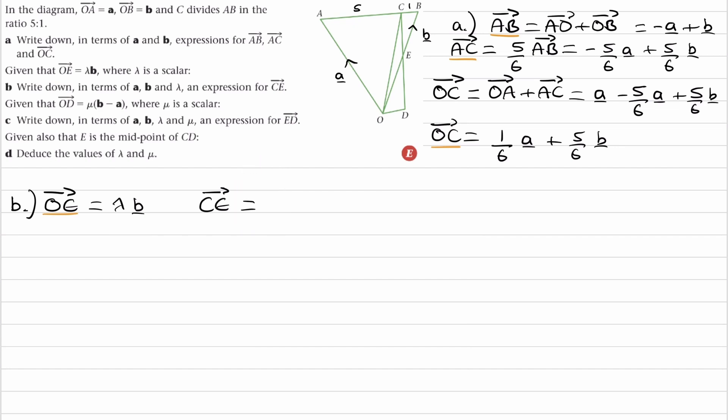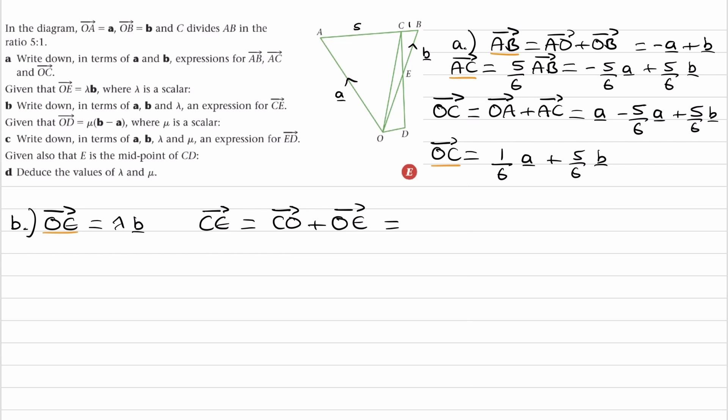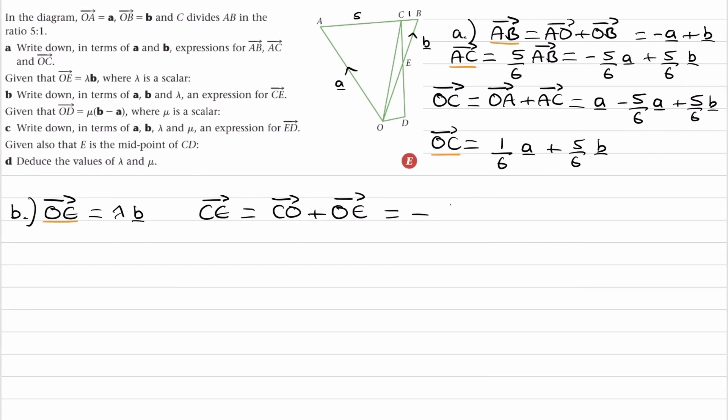This will then be the negative of OC, so minus a sixth a minus 5 sixths b plus OE, which is lambda b. And then we can simplify this. So I can write this as minus a sixth a, and then with the next two terms, the terms with b, I'm going to factorize out the b. So plus lambda minus 5 over 6 times b.